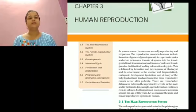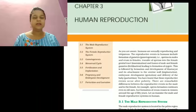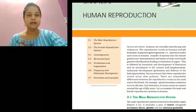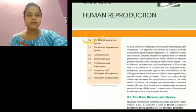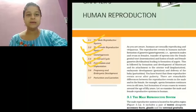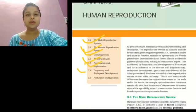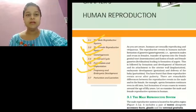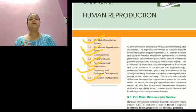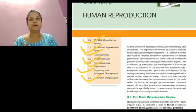Now in this chapter what we consider, we consider the following topics: the male reproductive system, the female reproductive system, gametogenesis, menstrual cycle, fertilization and implantation, pregnancy and embryonic development, and parturition and lactation.